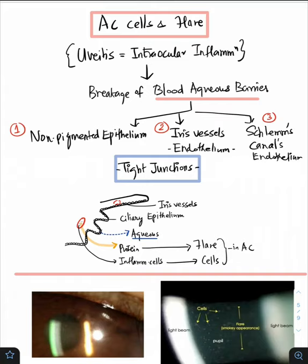Now let us understand why AC cells and AC flare is being formed. As you all know, uveitis is nothing but intraocular inflammation which occurs because of the breakage of the blood aqueous barrier, which is constituted by the tight junctions.